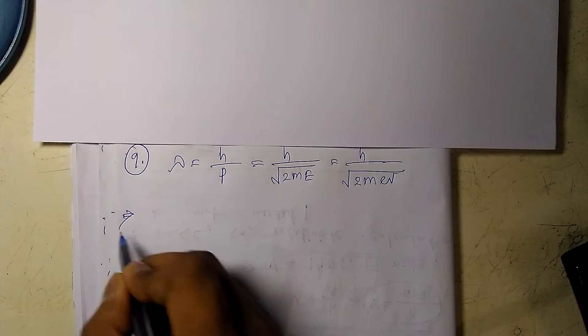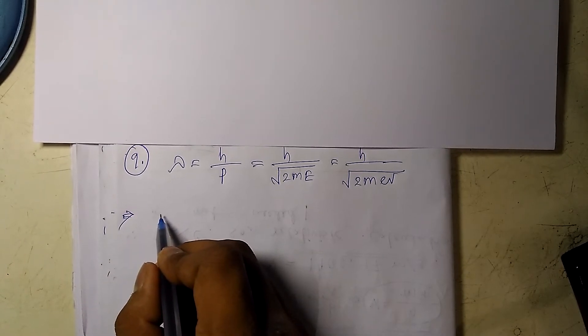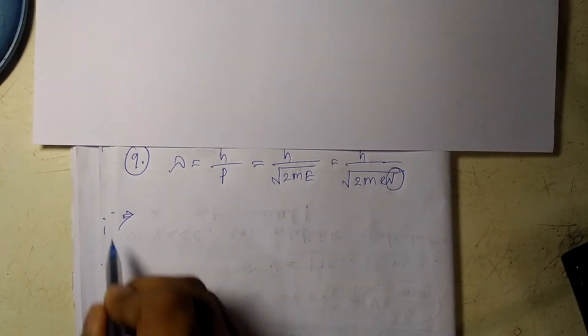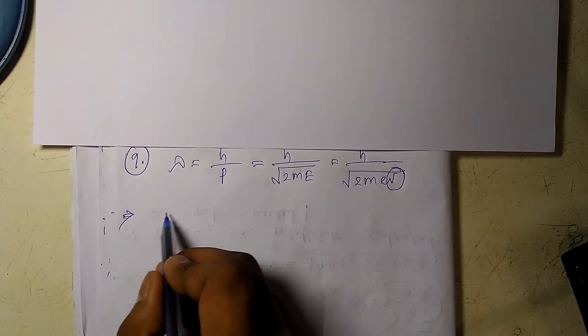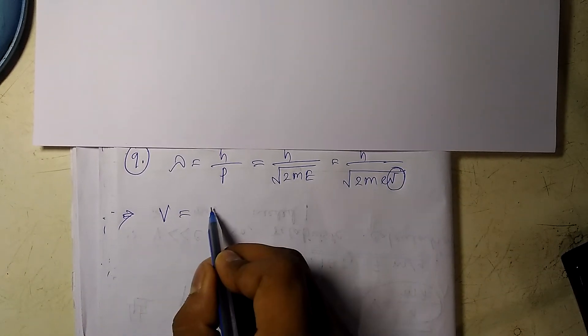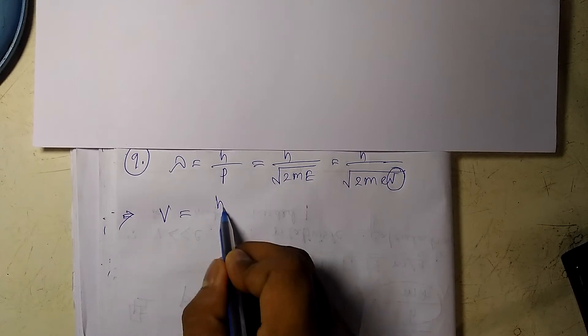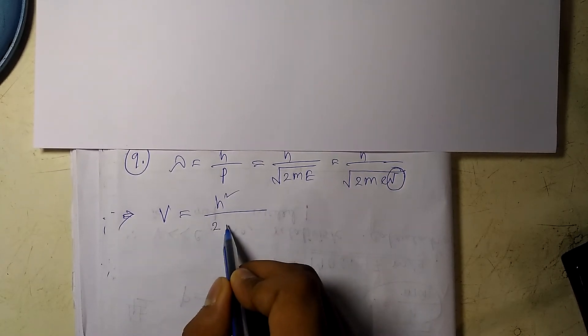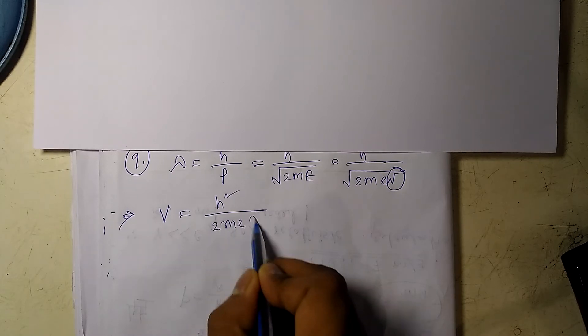So the problem asks us to find the potential difference. So we have to find V here. So V, if I write it, would be h squared by 2mE lambda squared.